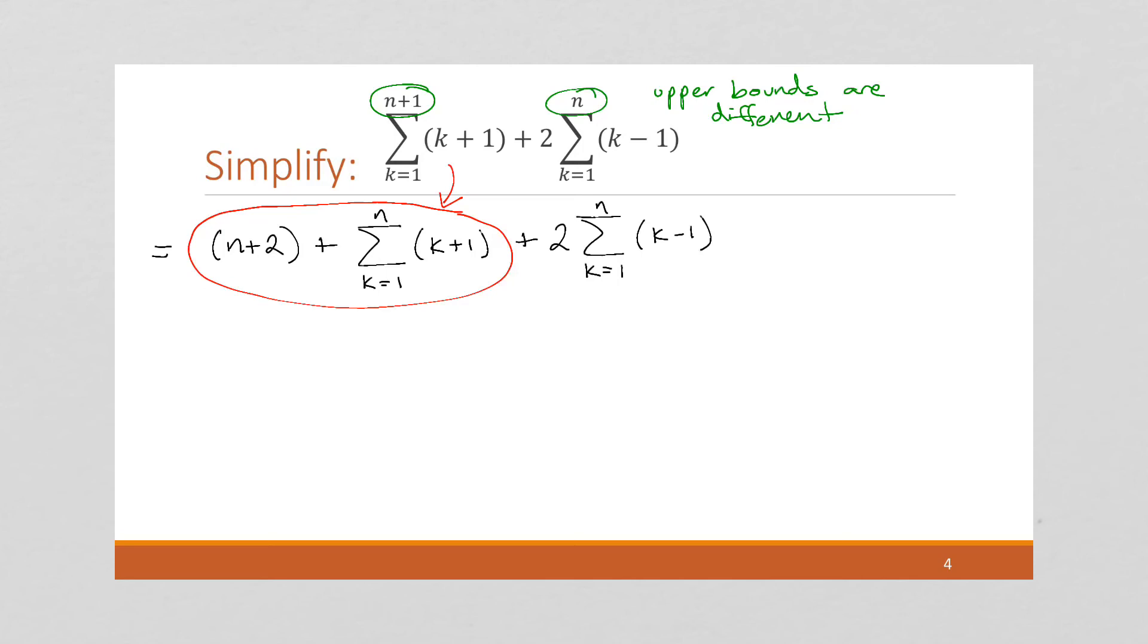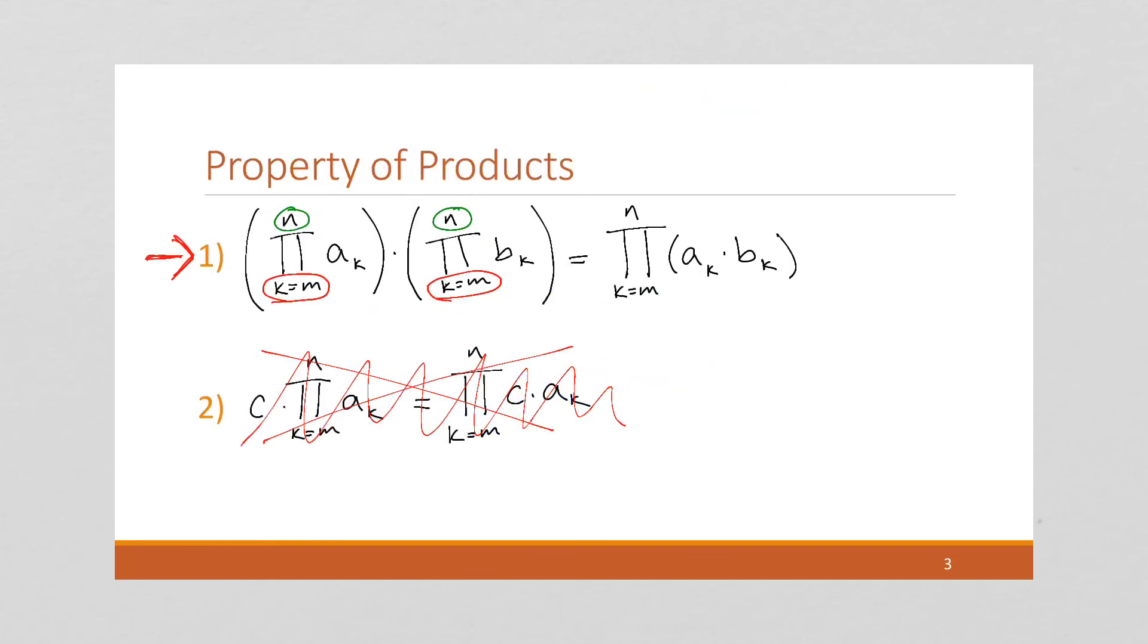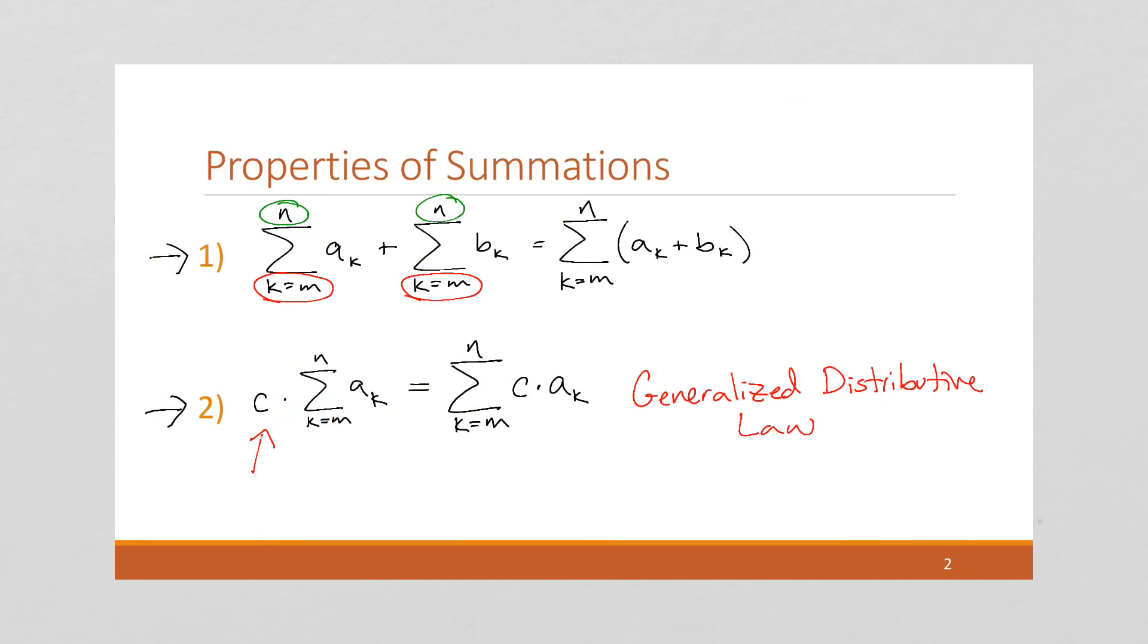Now, I cannot yet use my property 1 on these yet. Why not? Well, because property 1, if we go back and look at it, doesn't say anything about having a constant in front. It just says if we have two sums, we can combine them as long as the bounds are the same.